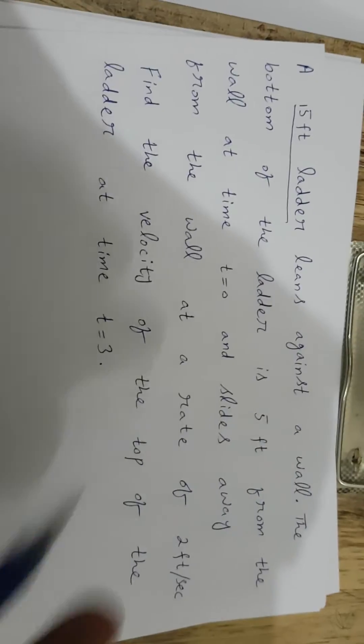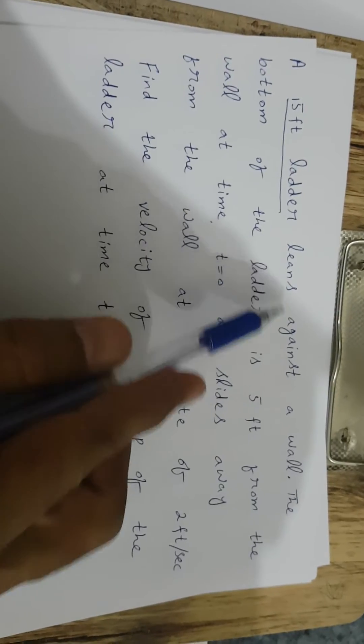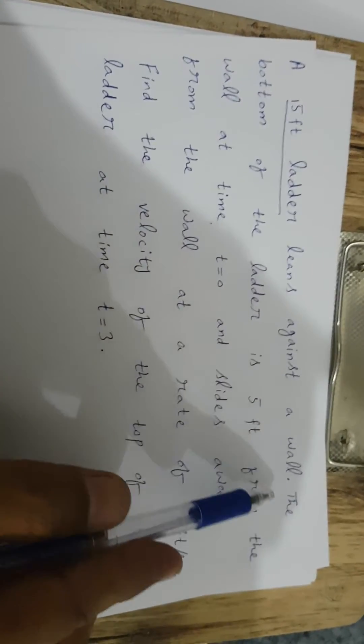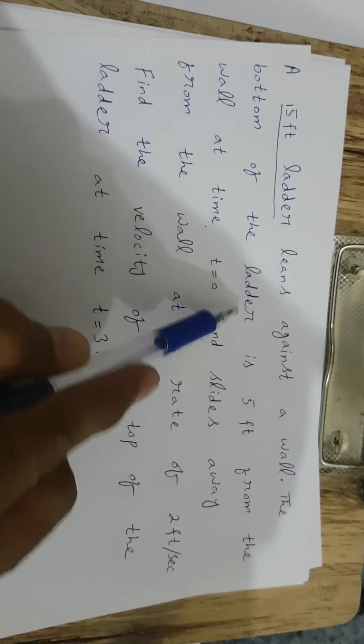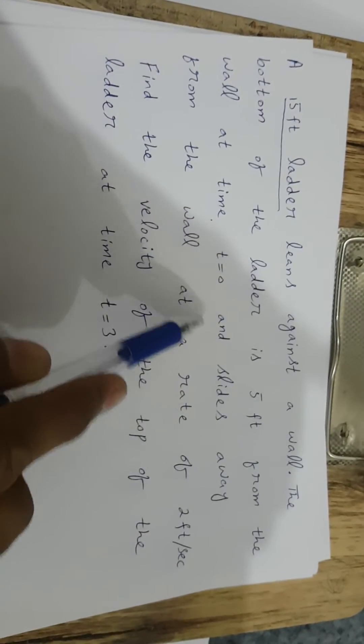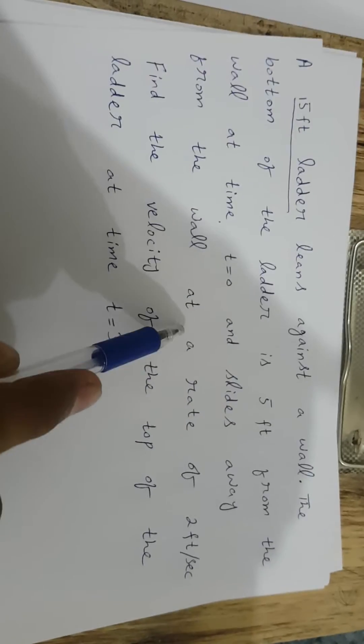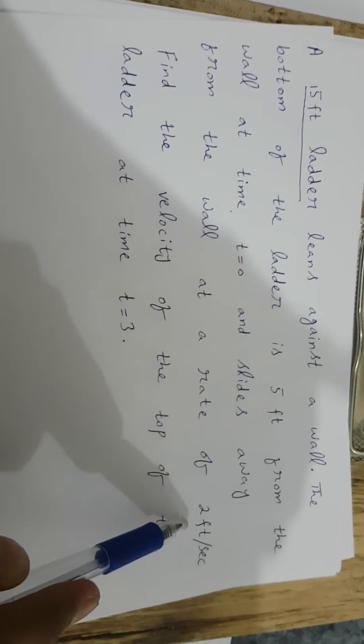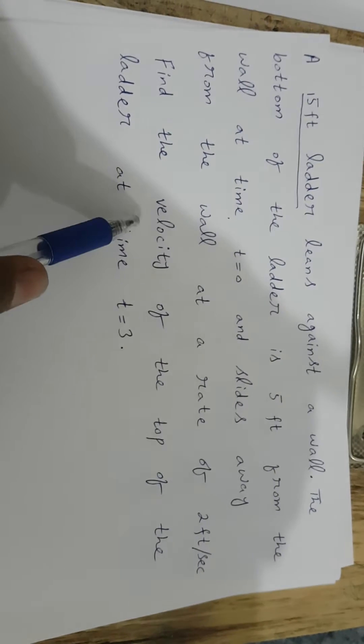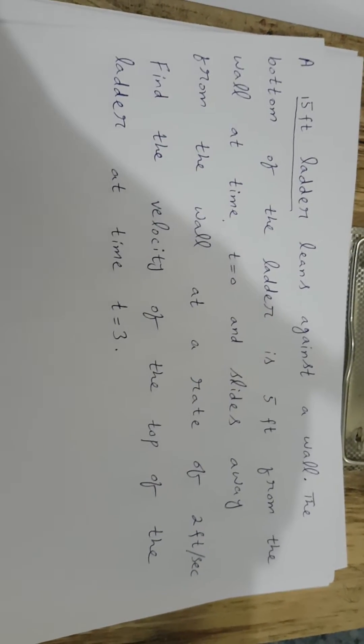The question is: a 15-foot ladder leans against a wall. The bottom of the ladder is 5 feet from the wall at time t equals 0 and slides away from the wall at a rate of 2 feet per second. We have to find the velocity of the top of the ladder at time t equals 3.